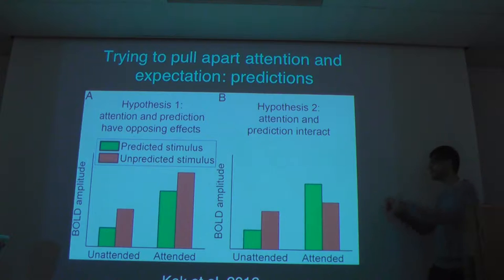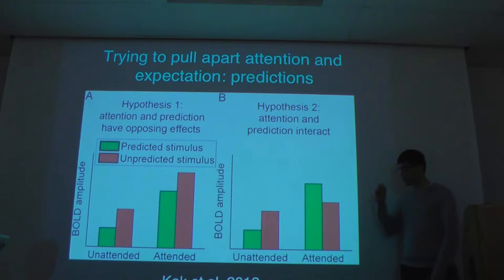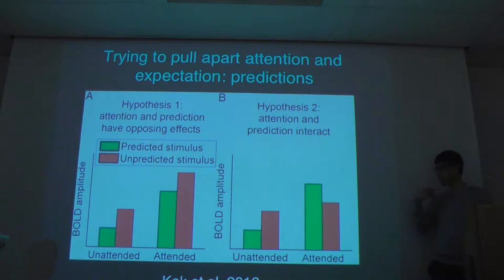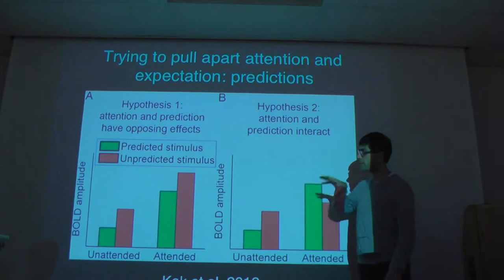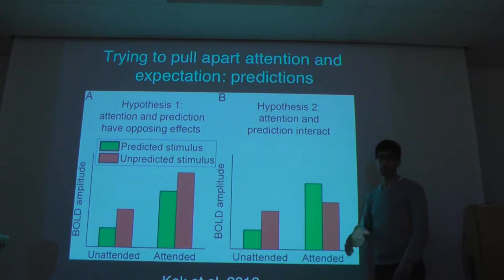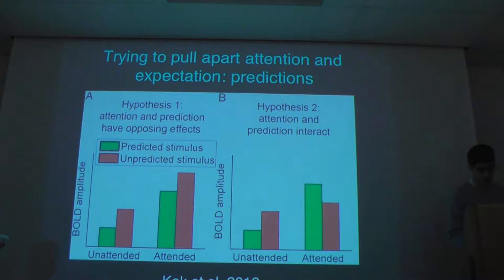Then you have to look a bit more carefully and say, well, what is the red? Oh, it's predicted or unpredicted. But in the blink of an eye, you can say, hypothesis 2 is actually saying something different from hypothesis 1. So that's what to aim for.